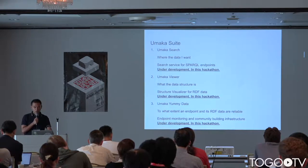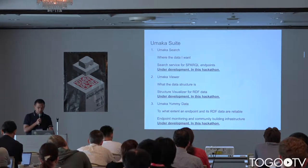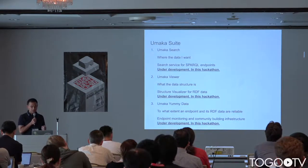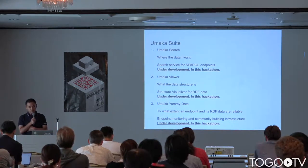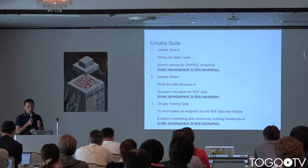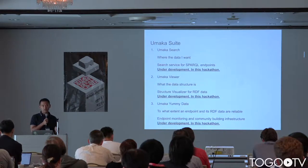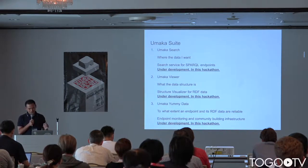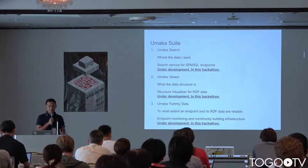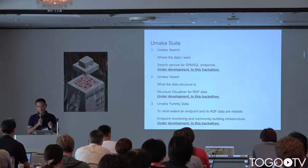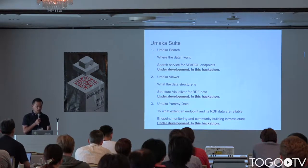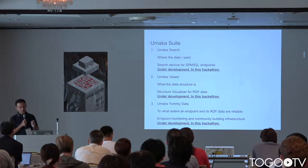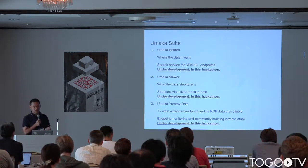The Umaka suite consists of three components: Umaka Search, Umaka Viewer, and Umaka Yami Data. Umaka Search is for people who want to find data, but it's not yet open. I tried indexing all the triples in RDF data, but with 5 to 50 billion triples it's very difficult, so I changed my approach to compressing URIs since URI patterns in RDF datasets are very simple.